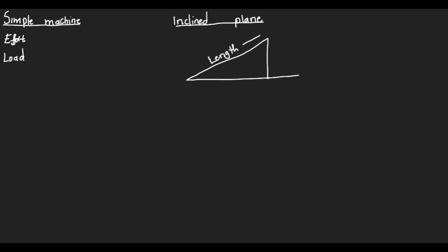Whenever we have this diagram we are dealing with what we call an inclined plane. This slanting surface is known as the length, and we also have the height — the one that moves perpendicular to the ground. Now if we are about to lift a box into a car, we have two choices: we can lift the box by moving it in a straight line against gravity, or we can push it along this slanting surface.